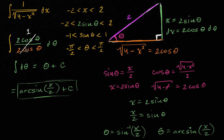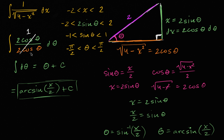Another concern: we divided by cosine theta, so cosine theta must not equal zero. As long as theta is strictly between negative π/2 and π/2, cosine of theta is not only nonzero but actually positive. If negative π/2 or π/2 were allowed, you'd get zero in the denominator and we'd need further restrictions. So everything checks out and we can feel confident in this answer.